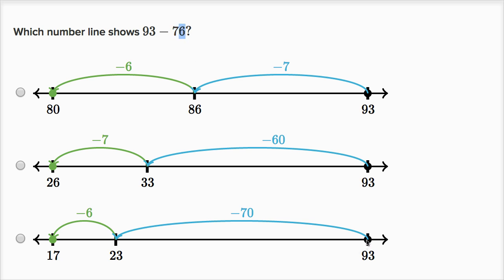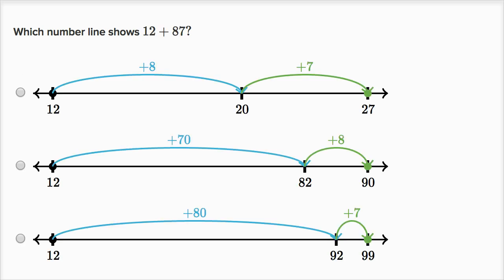and then six ones. So here we're subtracting seven tens, we're subtracting 70. And then we are subtracting six ones. So that's definitely going to be the right choice. So let's see, maybe one more just for fun.